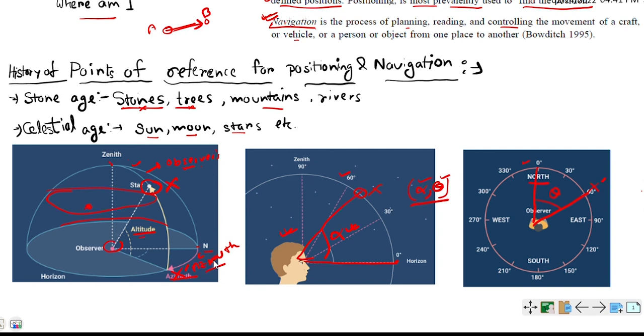There are various systems to determine the position in Celestial Age: the horizon system, the independent equatorial system, the dependent equatorial system, the celestial latitude and longitude system. We shall not discuss those things elaborately because this is not mentioned in the syllabus, so let's move to another topic.